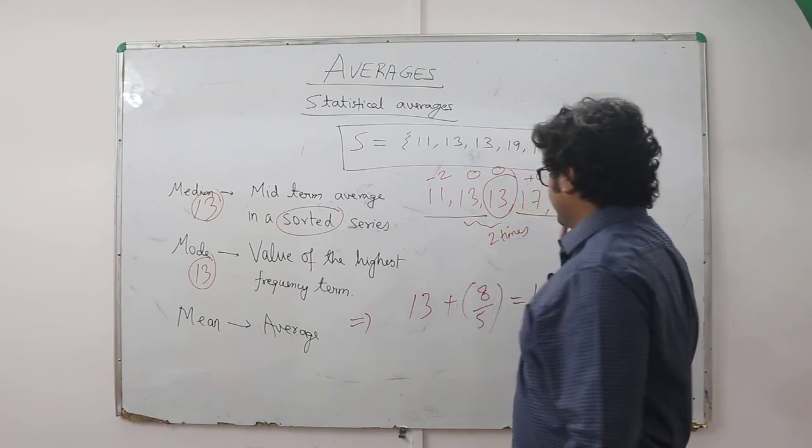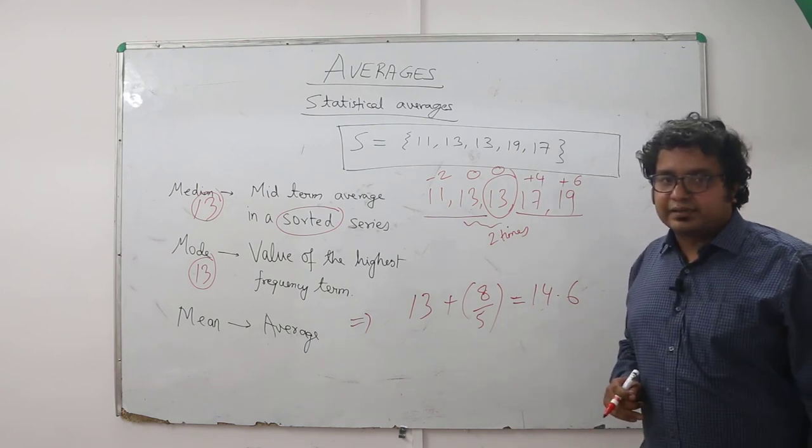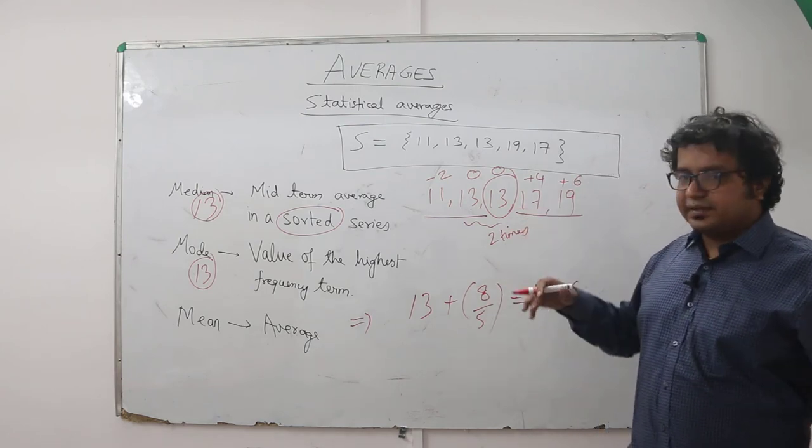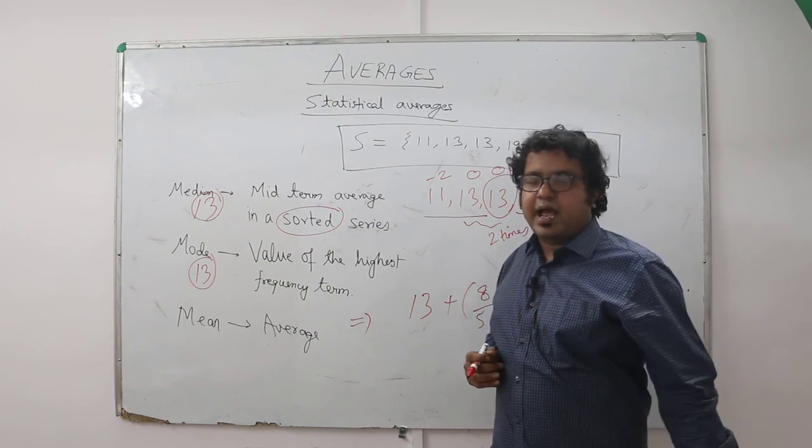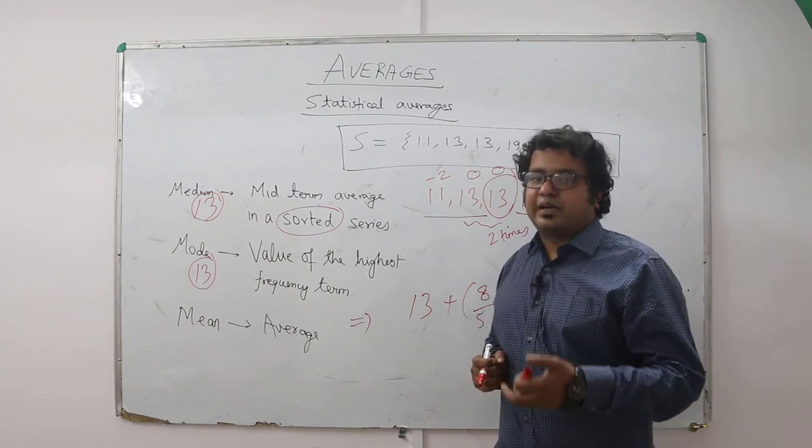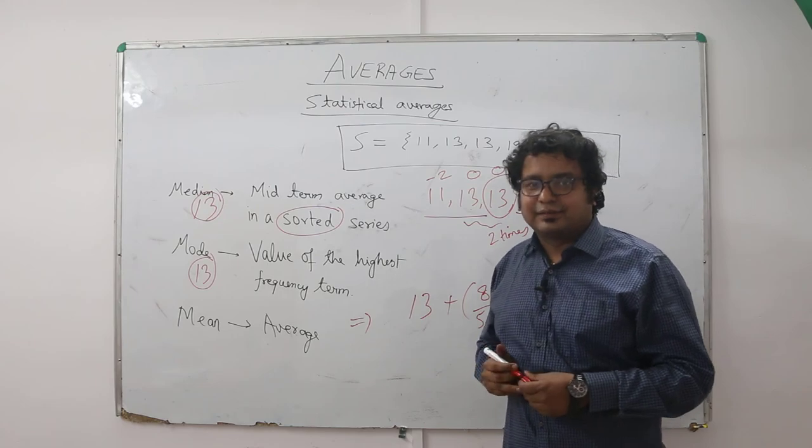This becomes your final answer. So median is the midterm, mode is the value of the highest frequency term, and mean is the actual average. I hope this is clear. Thank you.